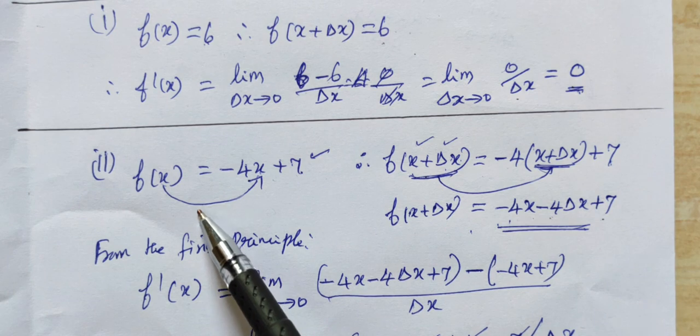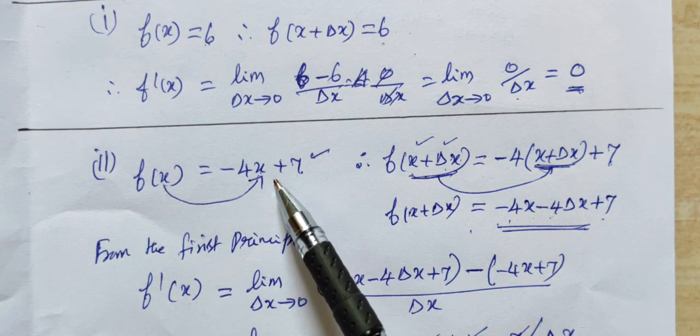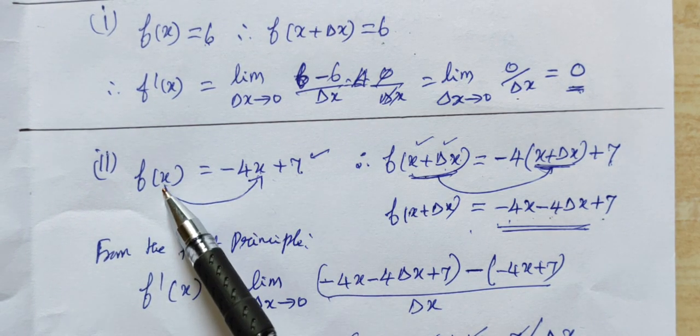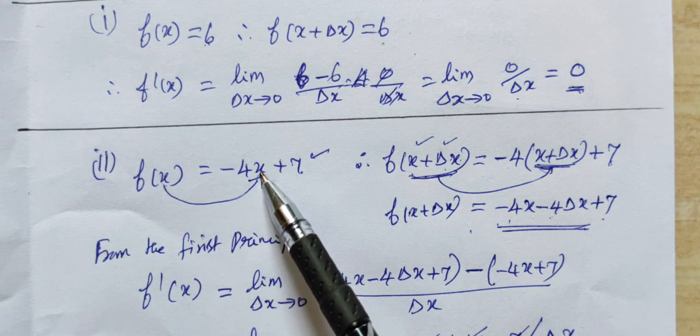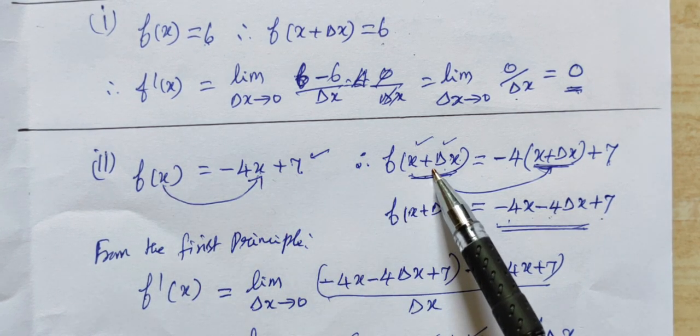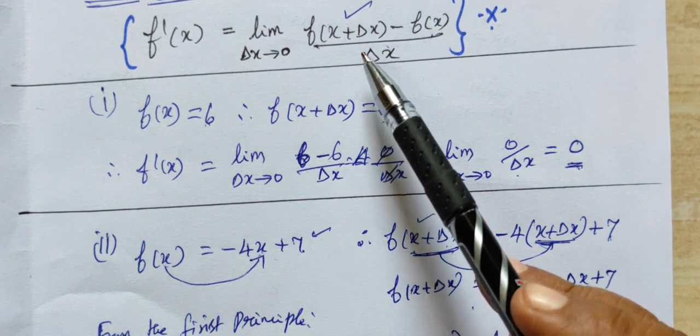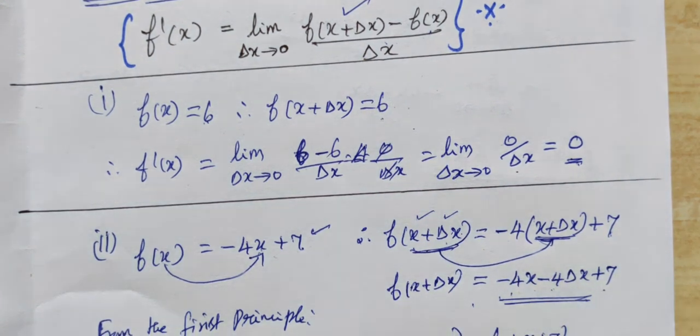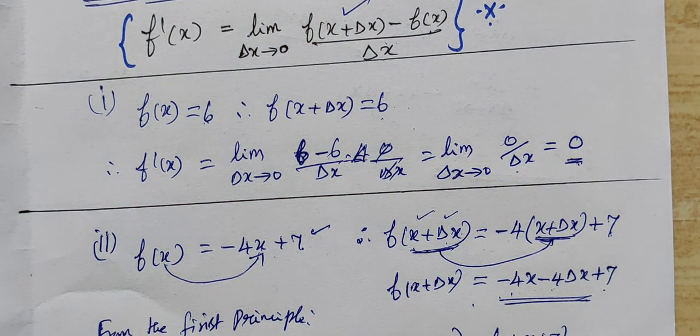Now, subdivision 2: f(x) = -4x + 7. If you have x, then x will be replaced. We have x plus delta x, so we have x plus delta x.